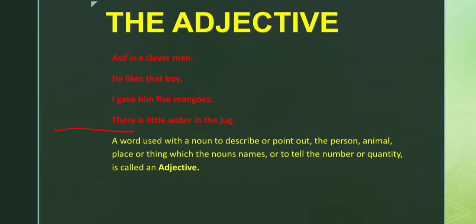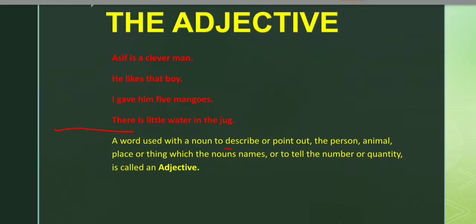So the definition of an adjective will be: a word used with a noun to describe or point out a person, animal, place, or thing which the noun names, or to tell the number or quantity. It also tells the number and quantity. The word will be called an adjective. Simply put, an adjective modifies or tells something more about the noun.